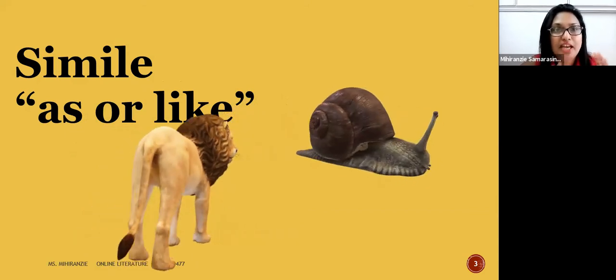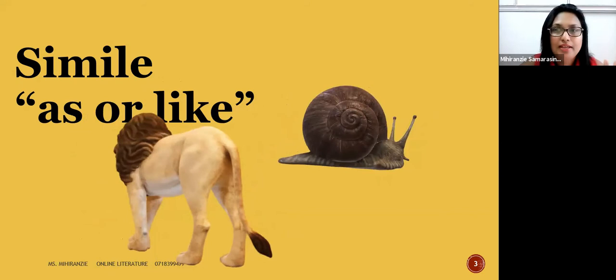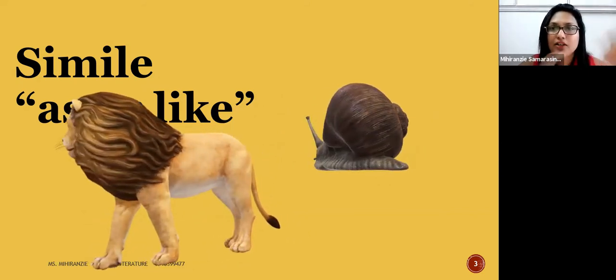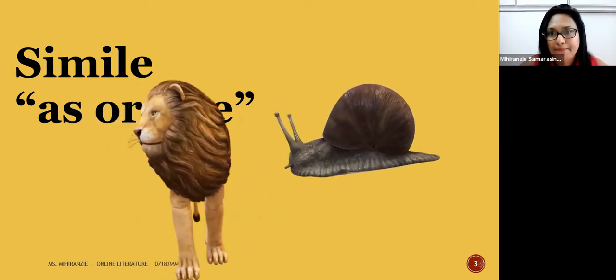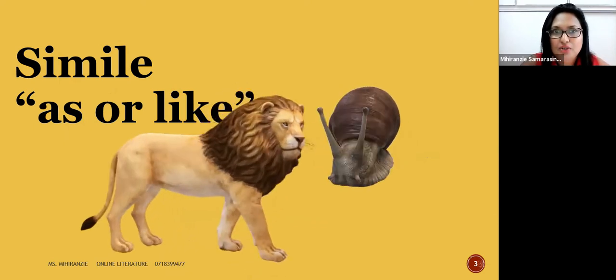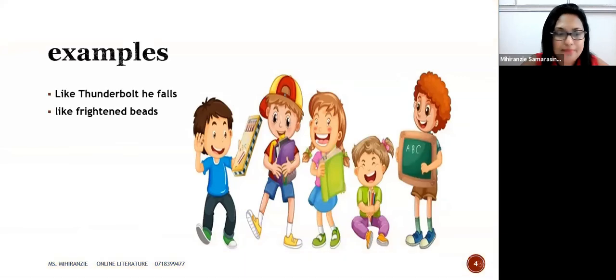But not always in English language. Sometimes you use the word 'like' or 'as', but it doesn't always bring in a comparison—then you can't take it. But if you're comparing two things, only then you call it a simile. We're moving on. In your anthology, I think you understood. In your anthology I've given several examples, like 'Thunderbolt he falls'. You get it in the handout, but what you have to do is I've not given you the poem. Can you find the poem for the first example 'like thunderbolt he falls'?